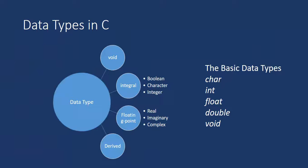Another kind is integral type. In integral type, there are three kinds of things: Boolean, character, and integer. Next comes floating point. In floating point, there is real, imaginary, and complex numbers. Another kind of data type is derived data type. If some data type is newly created for special purpose using the basic primitive data types, then that data type will be called derived data type.